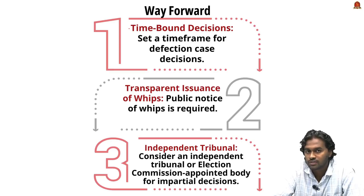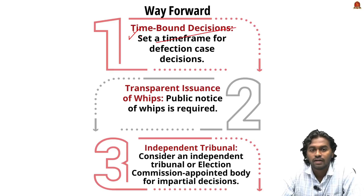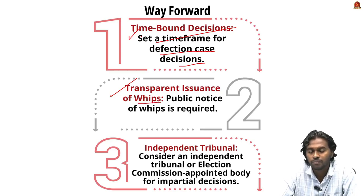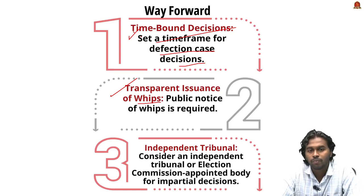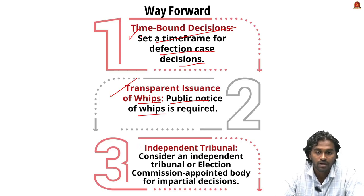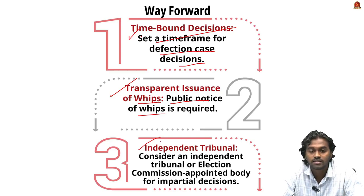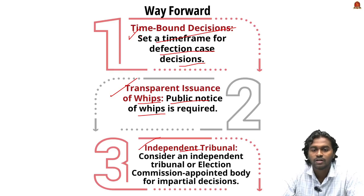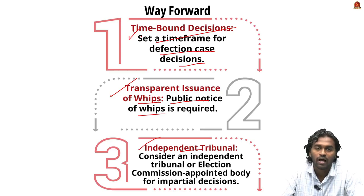From our perspective, measures to strengthen the anti-defection law include: time-bound decisions — establishing a timeframe for defection cases to reduce bias and provide political justice; transparent issuance of Whips — issuing public notices through newspapers or mass media to reduce intra-party conflicts that lead to defection; and independent tribunals — increasing the role of independent bodies such as the Chief Election Commission in deciding defection cases, ensuring unbiased rulings and strengthening democracy.